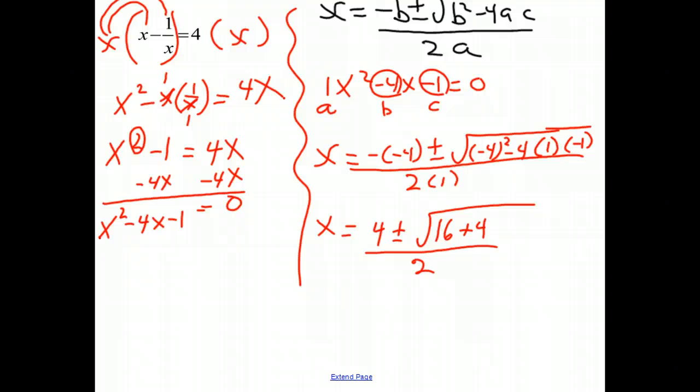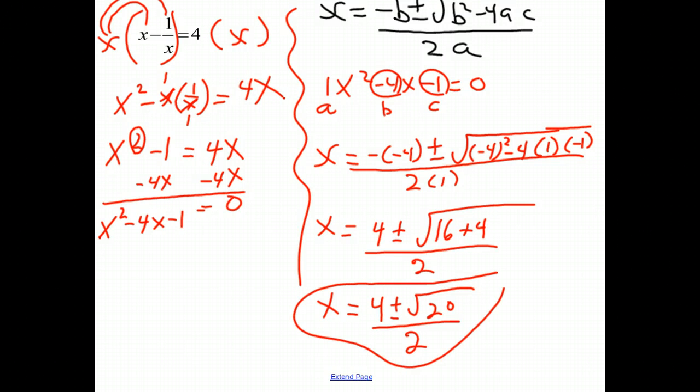And let's simplify that a little bit. That x equals 4 plus or minus the square root of 20 over 2. And that should be our answer. x is equal 4 plus the square root of 20 over 2, or 4 minus the square root of 20 over 2.